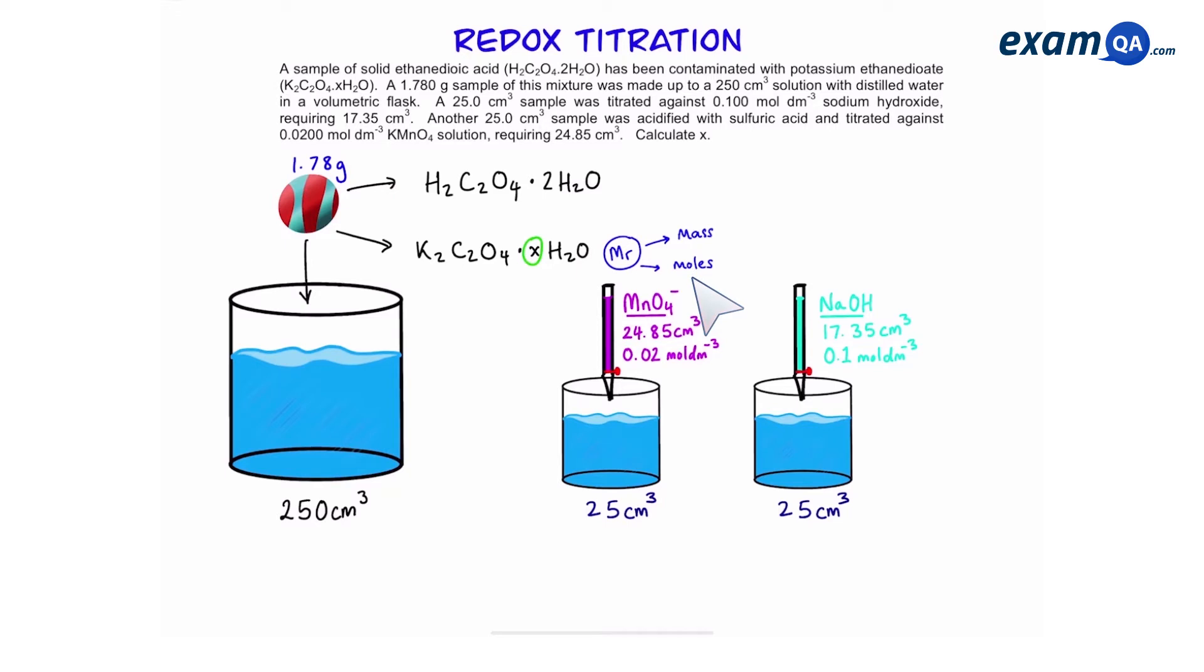Now remember this salt and ethane dioic acid are together mixed in that 1.78 grams. So we don't know exactly what the mass of only the potassium part is. But we do know that it's going to be 1.78 subtracted by the mass of the ethane dioic acid. As for the moles we can work that out because we know that it contains ethane dioate. We can titrate it with potassium permanganate and use the moles of that to work back and find the moles of our potassium ethane dioate.